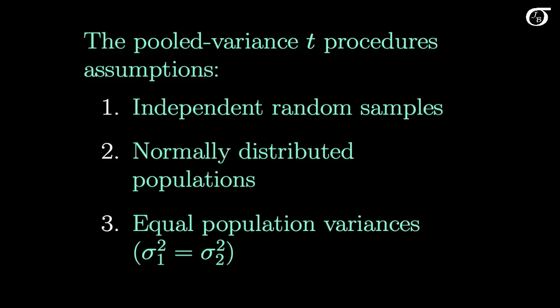The pooled variance T procedure assumes equal population variances. We probably wish we didn't have to assume this, but we do in order for the mathematics to work out for this procedure. So we say that sigma1 squared and sigma2 squared are equal — they equal some overall common variance, sigma squared.